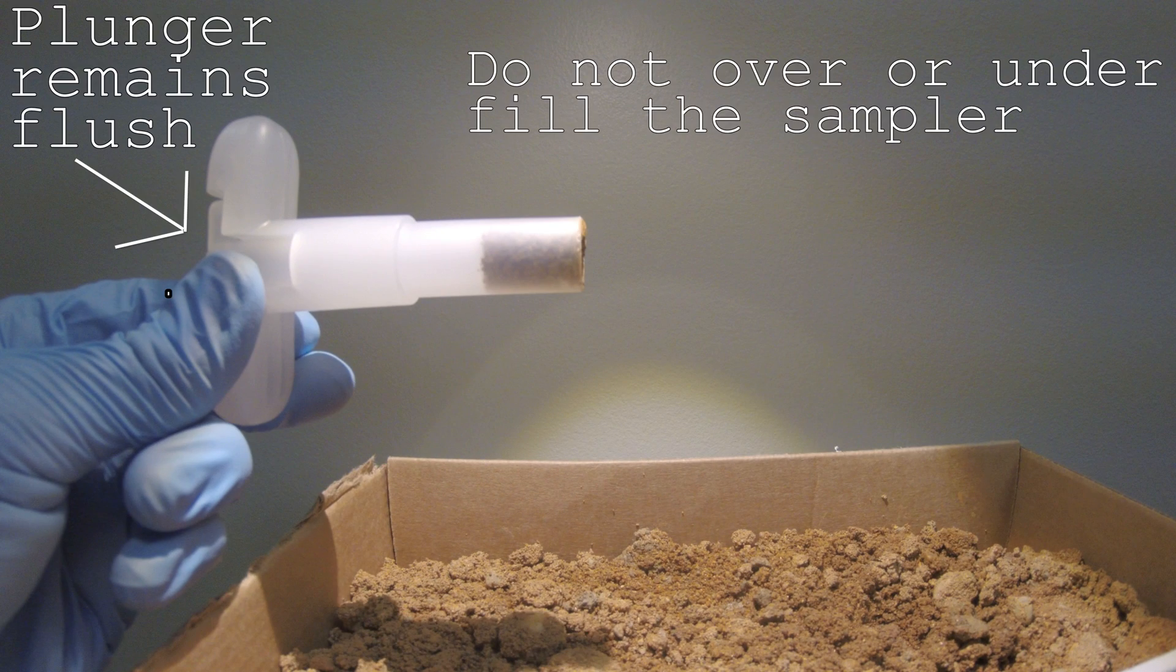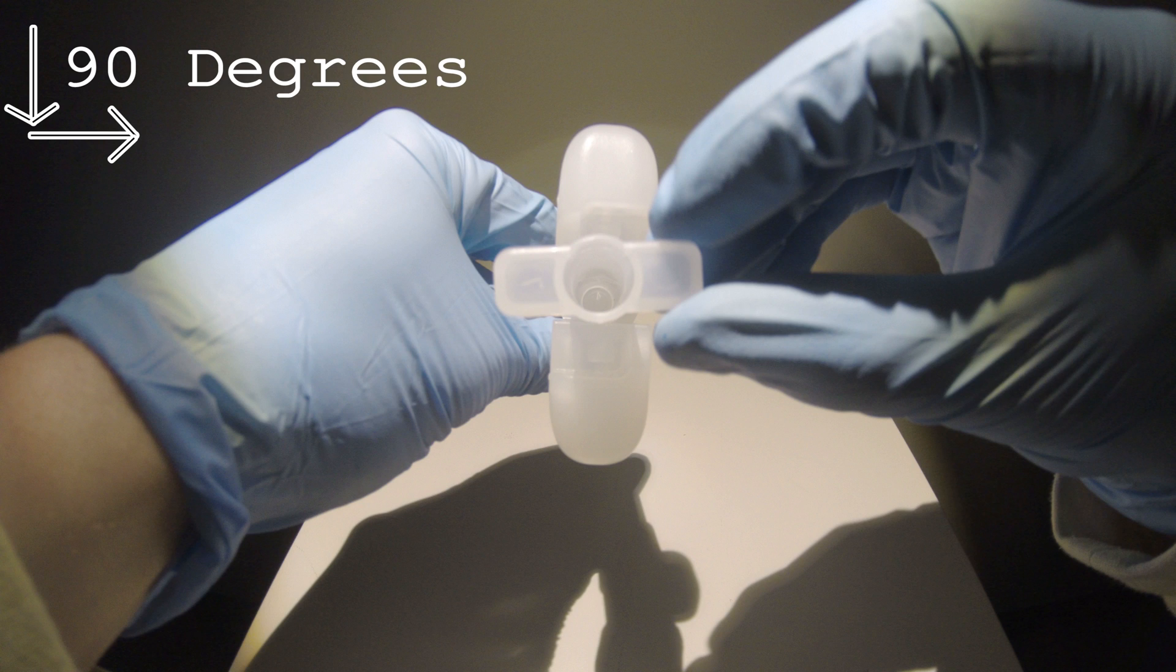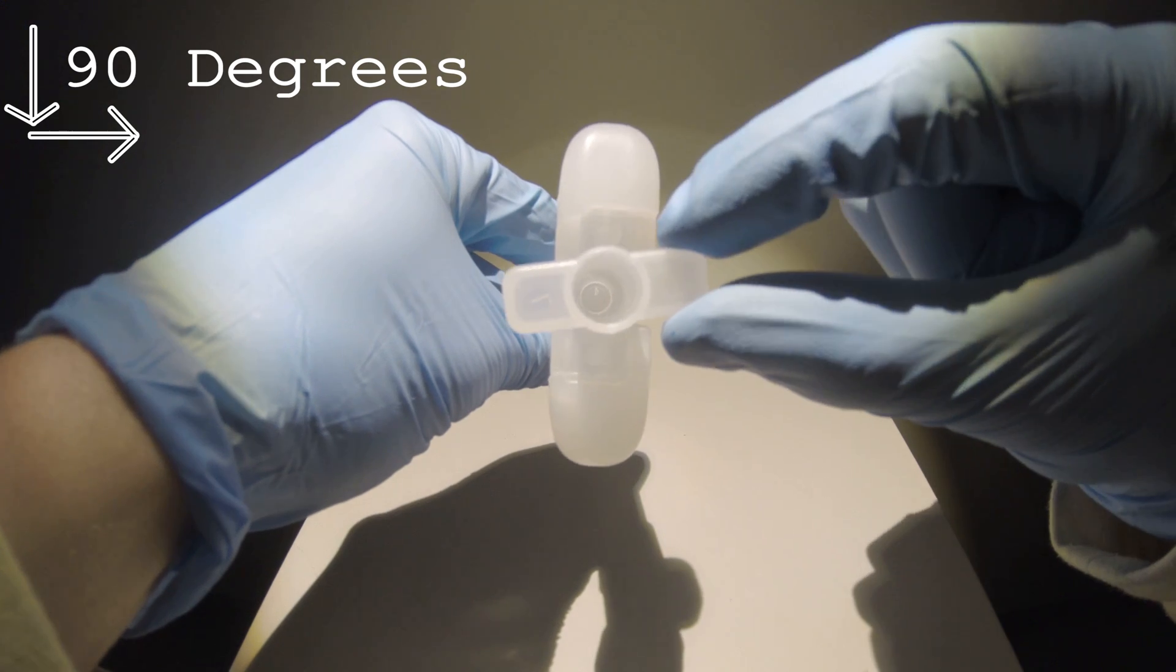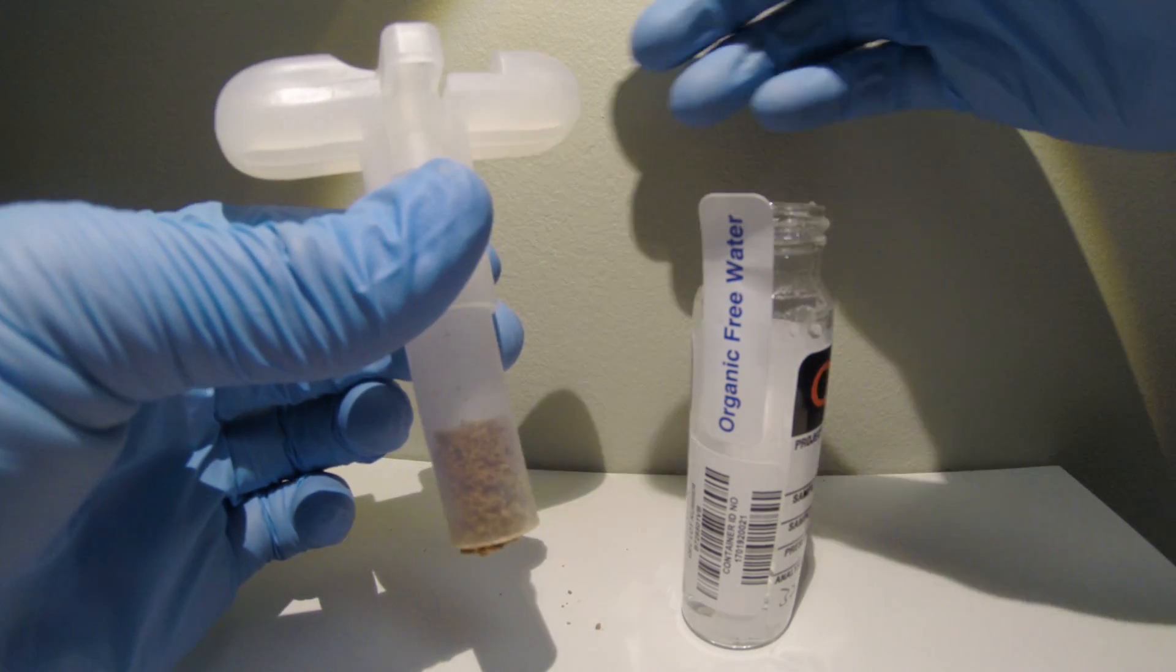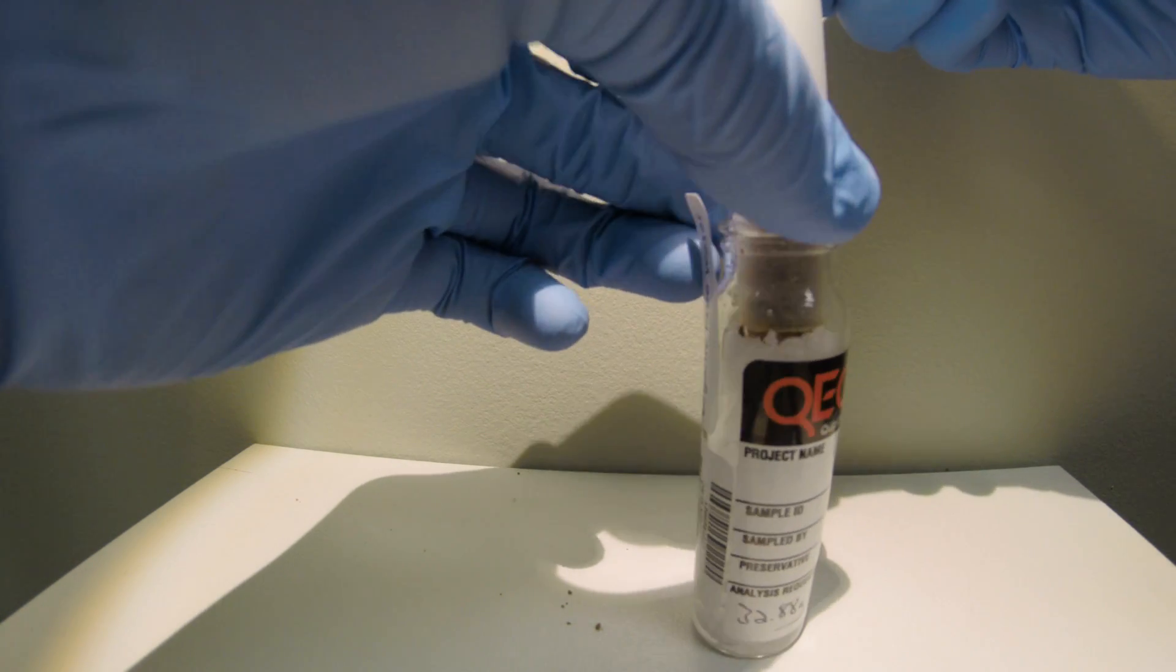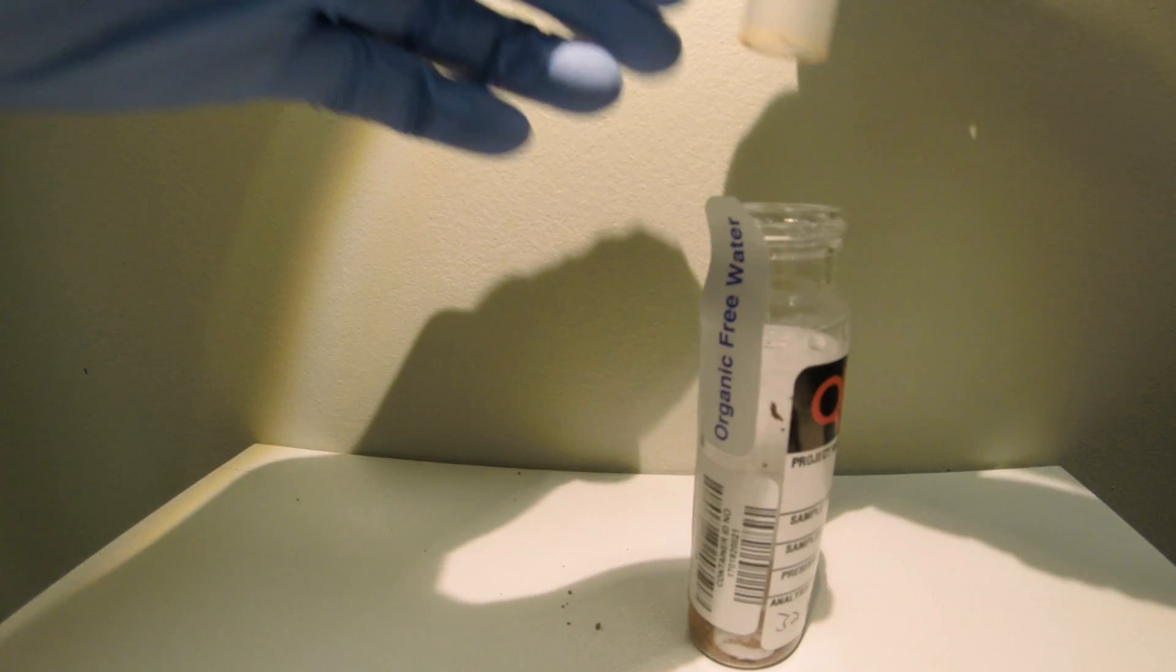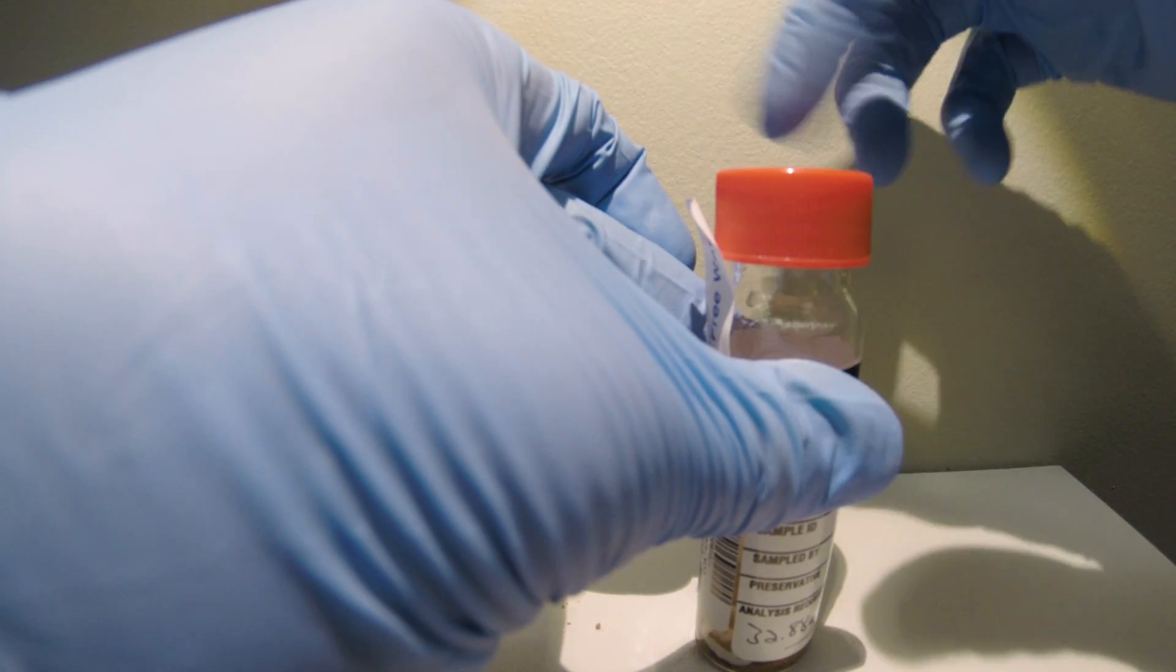The sample can now be pushed into the vial from the sampler using the plunger. As shown, lift the plunger out of the sampler and turn it 90 degrees. Once the plunger is oriented properly, place the sampler into the vial and push all of the sample through. Afterwards, quickly cap the vial.